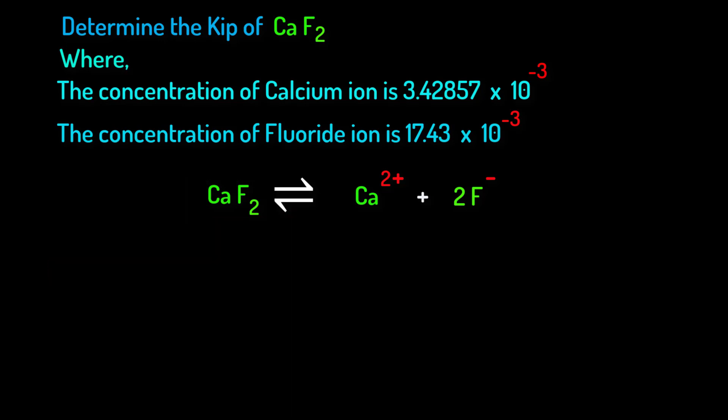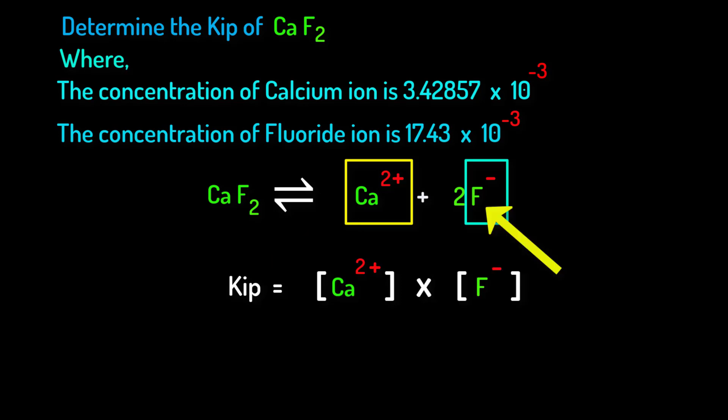By using these separated ions now we will calculate Kip. As we have this cation and this anion here. Therefore in second step we can write Kip is equal to the concentration of this cation times the concentration of this anion.